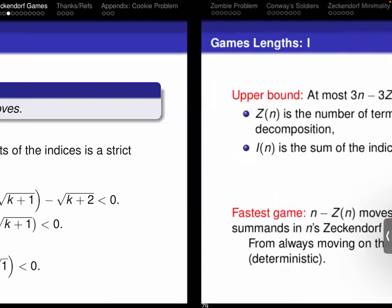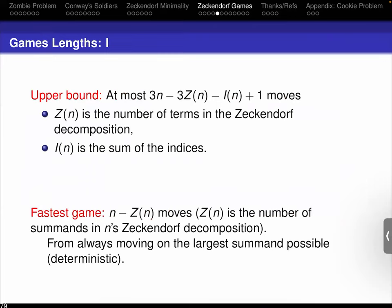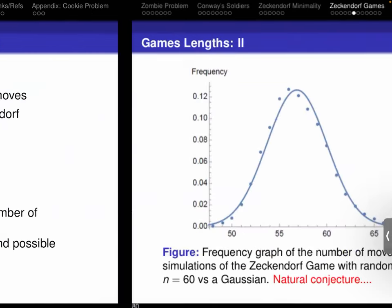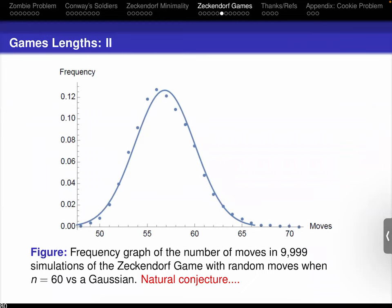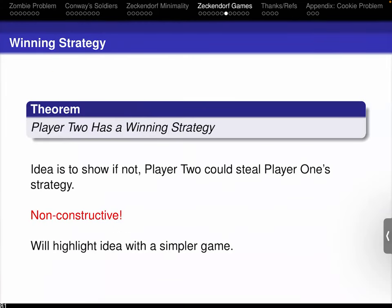This is a nice application of the fact that Zeckendorf is summand-minimal — we will end in the Zeckendorf. We have upper bounds for how long the game takes, bounds for which is the fastest game, and a conjecture that if you play randomly, the distribution of game lengths will be Gaussian. I want to quickly show that player two has a winning strategy using a parity steal argument — one of the most brilliant ideas in game theory. It is sadly non-constructive; we have no idea how to do it in practice.